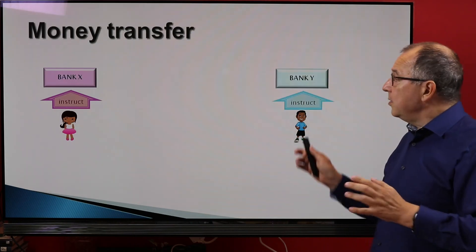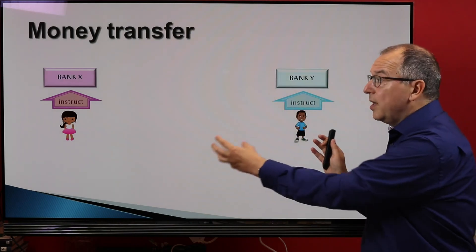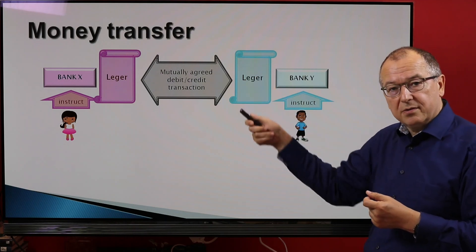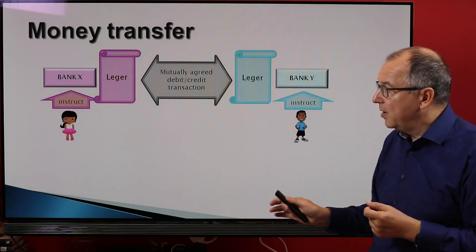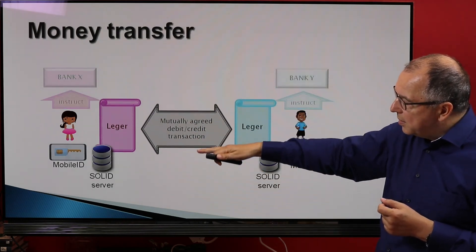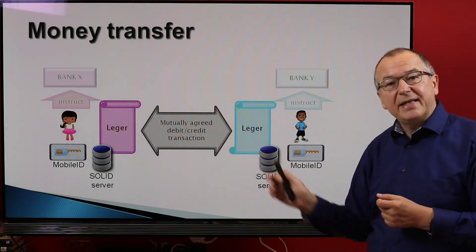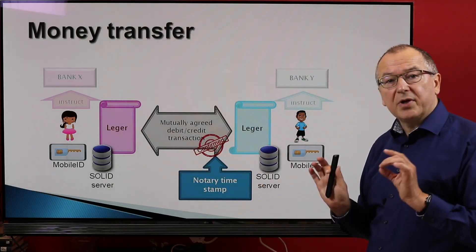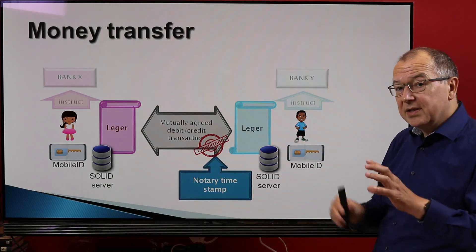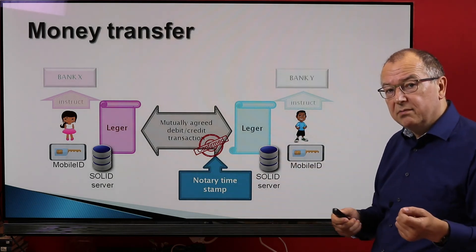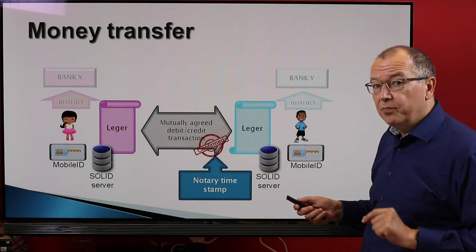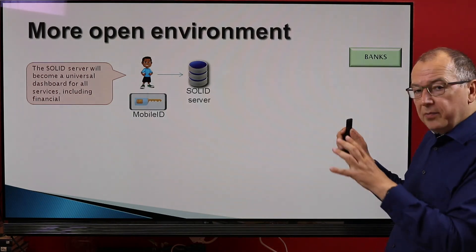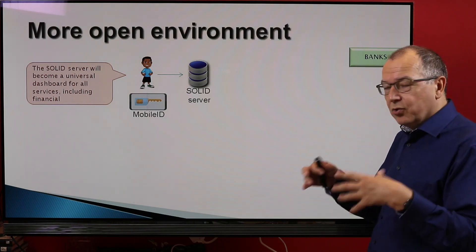Money transfer: at the moment, the only way to transfer money electronically is to ask banks to do the exchange — debits and credits in the ledger. With solid servers, this layer can come directly to people, so they can exchange money directly. If they need a notary timestamp on the operation, that can be done, since both servers are cryptographically protected. Theoretically, people may just exchange electronic money without banks. If this is coming, it's better if you know it before your competition.